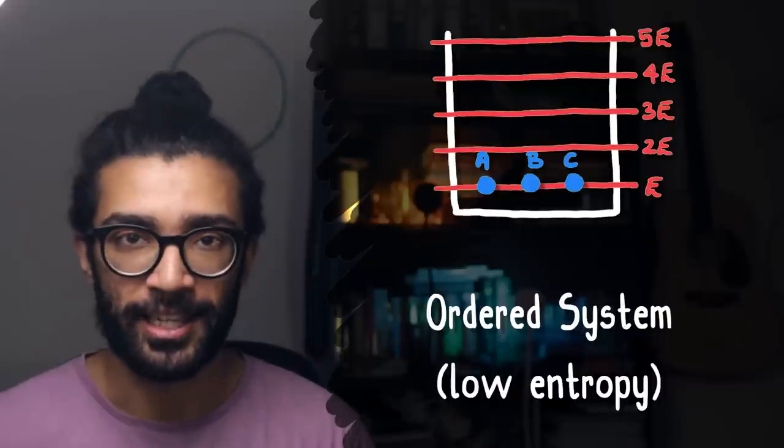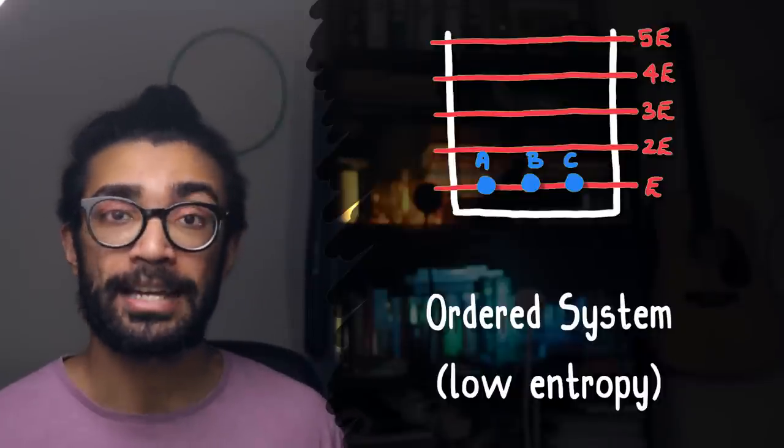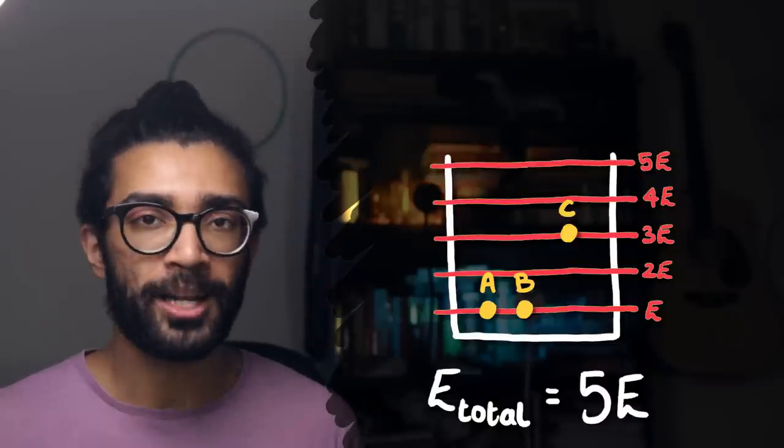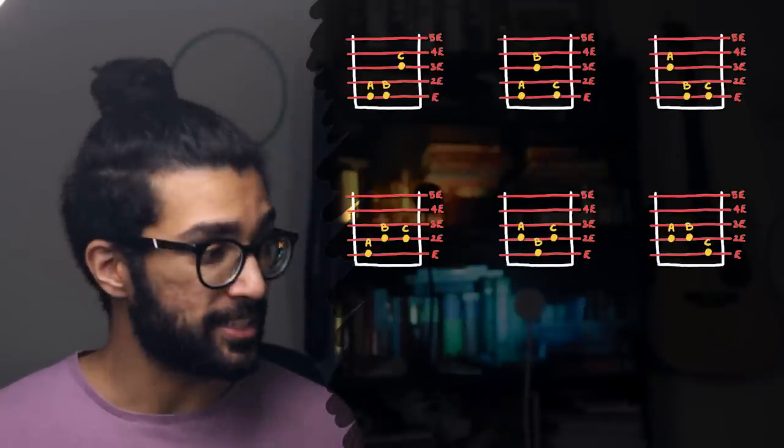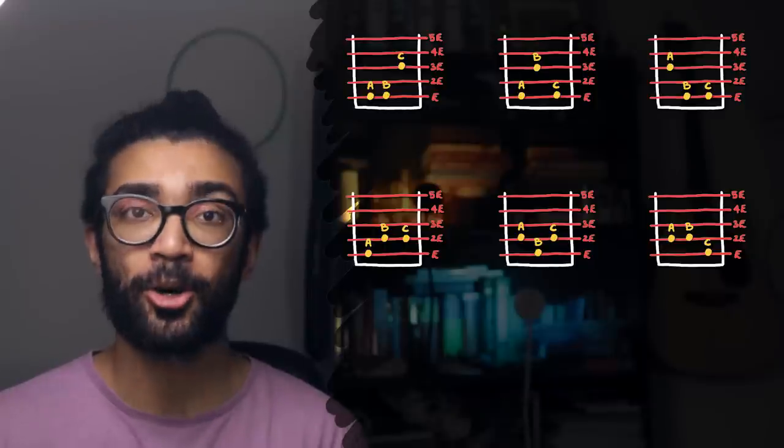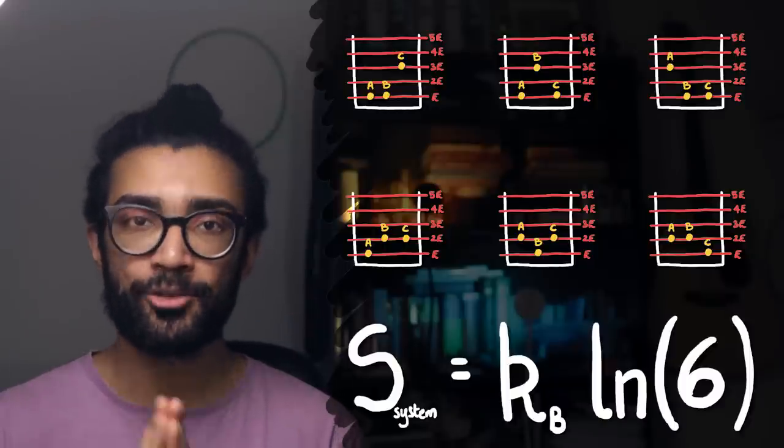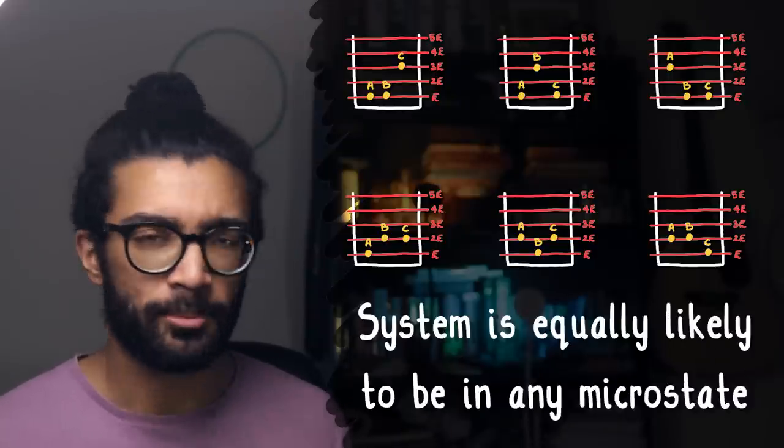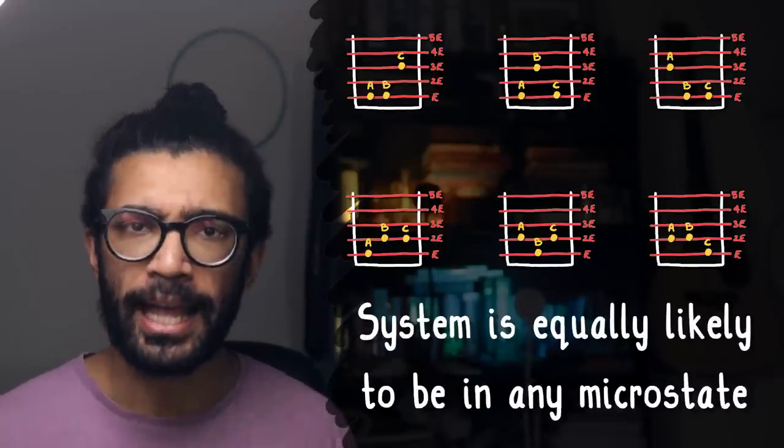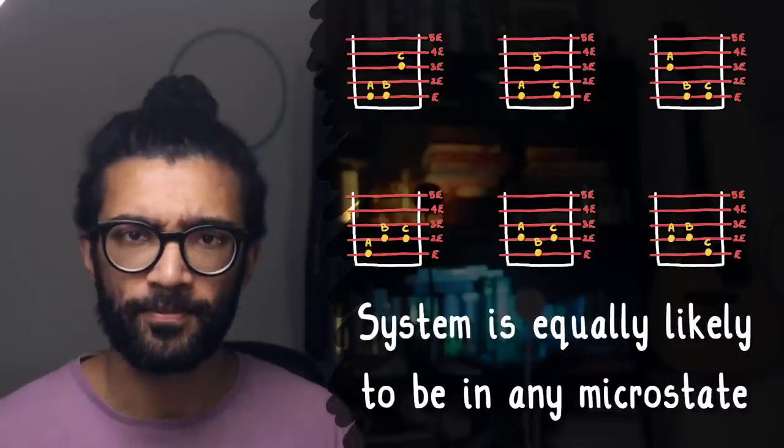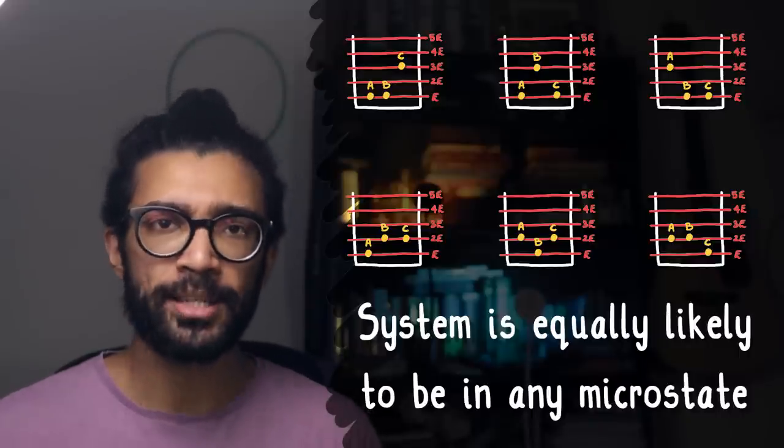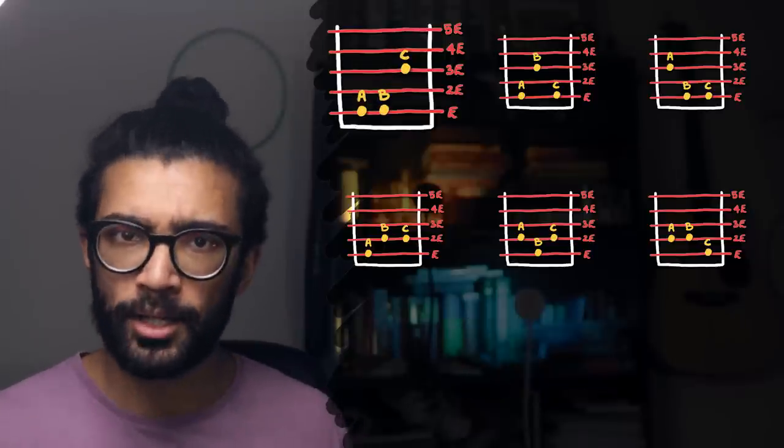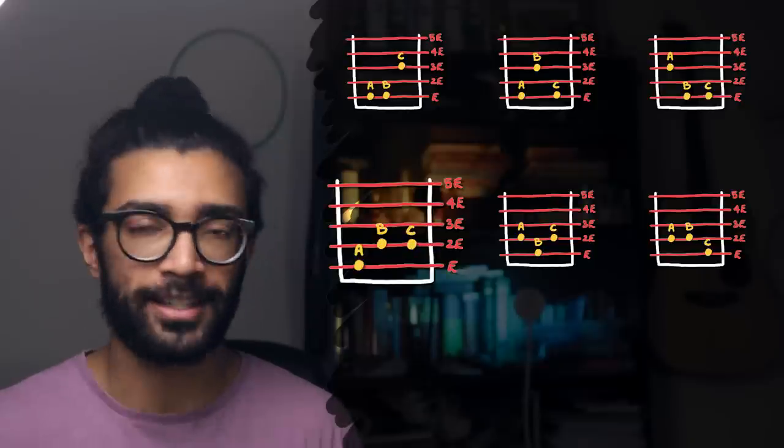Now, there is something else I need to mention here. If we go back to the system we were looking at earlier, total energy 5E, three particles in the box, and we bring up these diagrams once again, six different possible microstates that a system can occupy, then when we calculated this system's entropy, we made an implicit assumption. We assumed that the system is equally likely to be in any one of these microstates. Because when we calculated its entropy, all we said is that there are six possible microstates. We didn't say anything about, it's more likely to be in this one, or it's less likely to be in one, or anything like that.